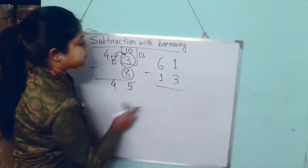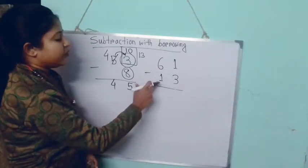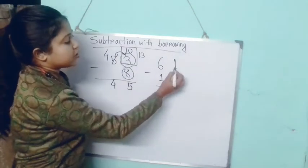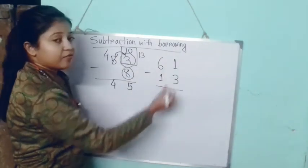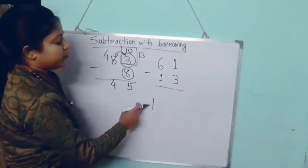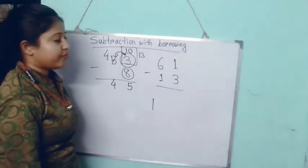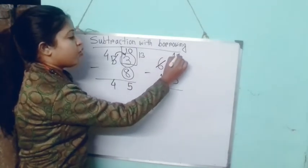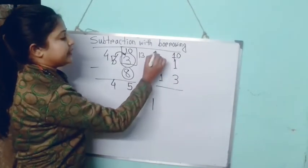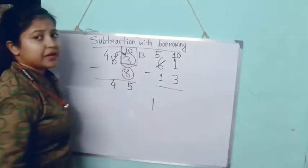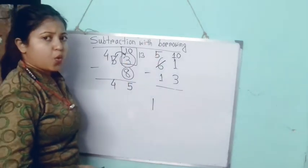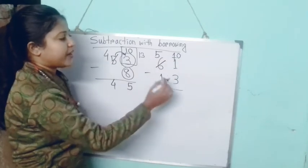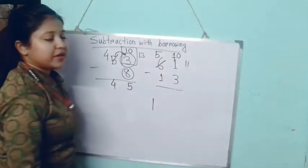Now for the second problem: 61 subtract 13. We cannot subtract 3 from 1, so here also we have to borrow 10. Then 6 becomes 5 — the previous number will be 1 less, that means 5. And the ones place will be 10 plus 1, which is 11.